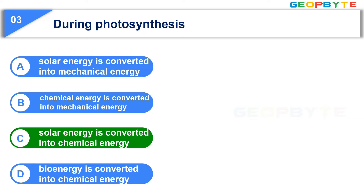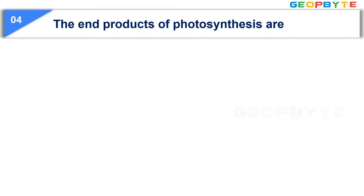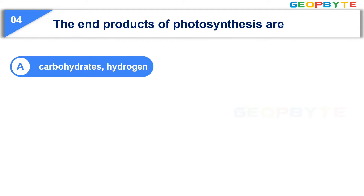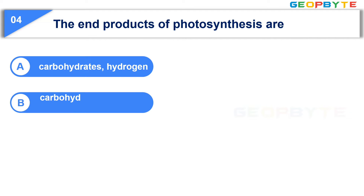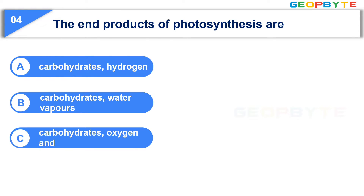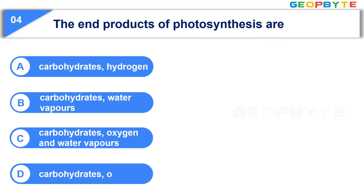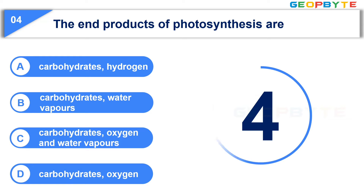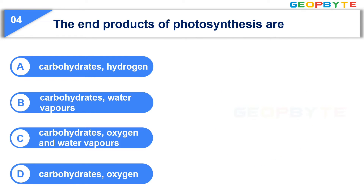Solar Energy is converted into Chemical Energy. The fourth question is: The end products of photosynthesis are — Option A: Carbohydrates and Hydrogen. Option B: Carbohydrates and Water Vapors. Option C: Carbohydrates, Oxygen, and Water Vapors. Option D: Carbohydrates and Oxygen. Your time starts now. Your time is up and the correct answer is Option D: Carbohydrates and Oxygen.